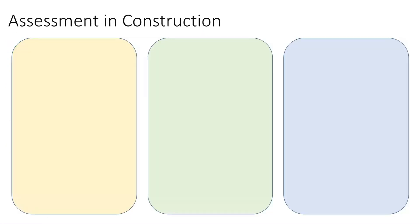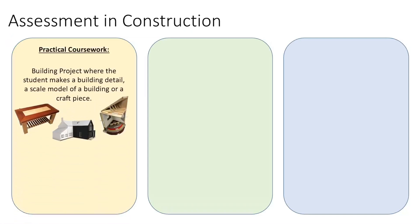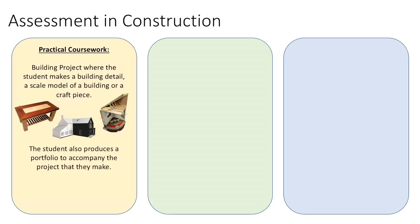Construction Studies has three assessments. Similar to Junior Cert Woodwork, it starts with a practical coursework where you're asked to design and manufacture your own artefact. That can be a building project with building detail, like a roof or foundation you've learned about, a scale model of a building, or a craft piece. You design a portfolio to complement this, detailing everything from conceptualization through manufacture to evaluation. This accounts for 150 marks, 25% of your Leaving Cert grade.